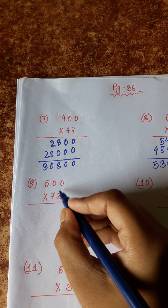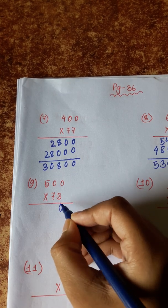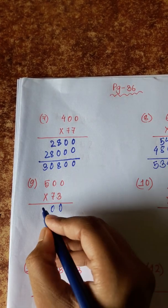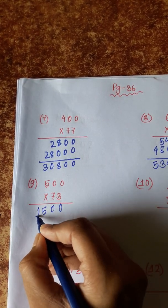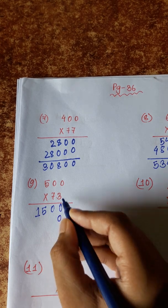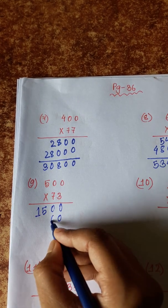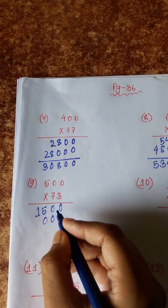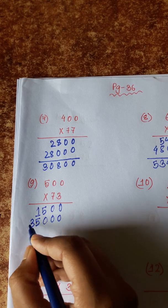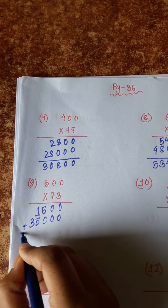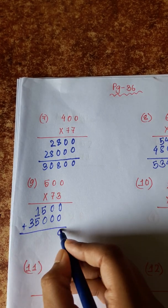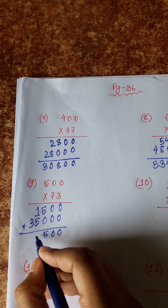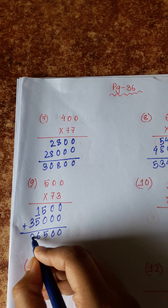Next is three zeros are zero, three zeros are zero, five threes are 15. Zero, seven zeros are zero, seven zeros are zero, five sevens are 35. Zero, zero — five plus one, six, three.